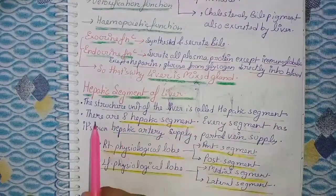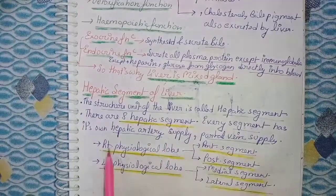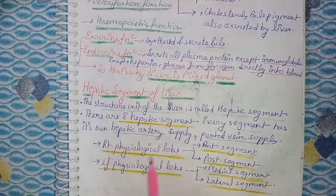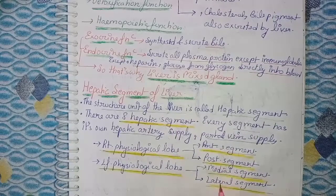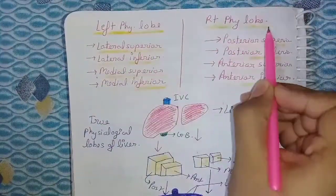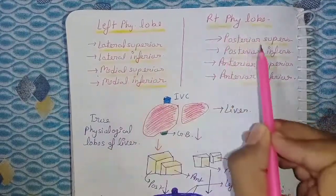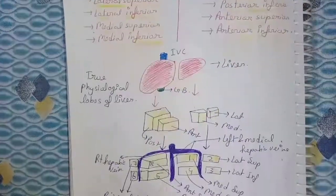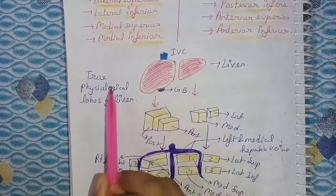What is a hepatic segment? The structural unit of the liver is called the hepatic segment. There are eight hepatic segments, and every segment has its own hepatic artery supply and portal vein supply. The right physiological lobe has two components — anterior and posterior. The left physiological lobe has two components — medial and lateral. In the left lobe: lateral superior, lateral inferior, medial superior, medial inferior. In the right lobe: posterior superior, posterior inferior, anterior superior, anterior inferior.